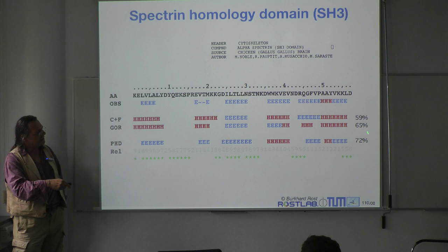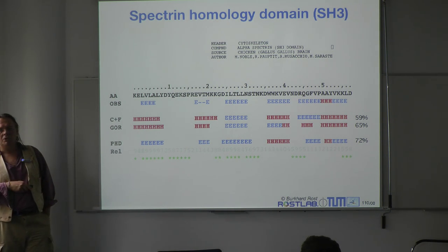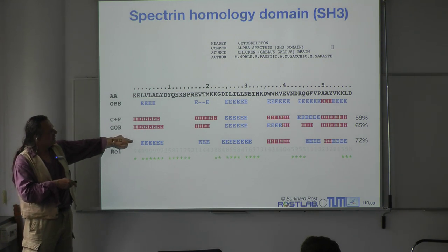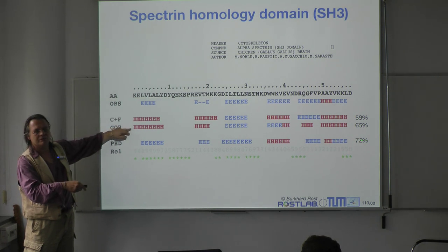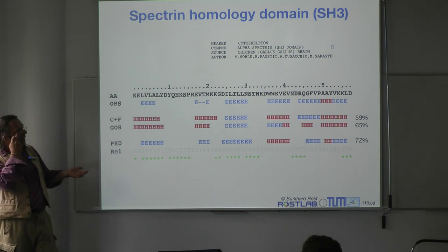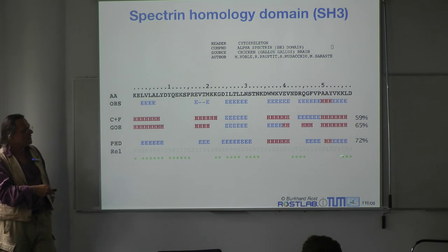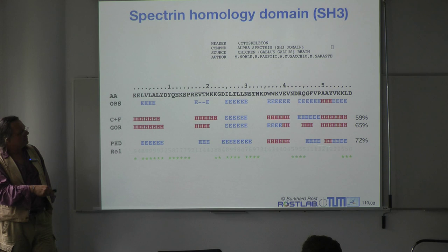That improvement may not be fully reflected in the numbers because there is so much loop in this example. But visually, this method here is a much better solution than the simpler one, even though looking at 65 versus 72 is not that much of a numerical difference. This number does not fully reflect what you see. Essentially, the simpler method makes one cardinal mistake.